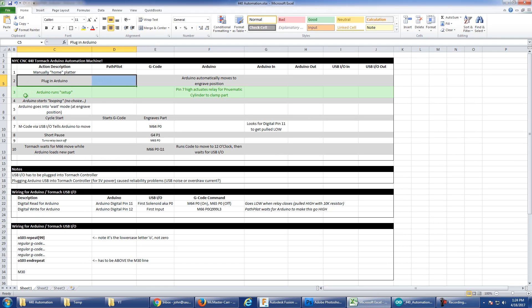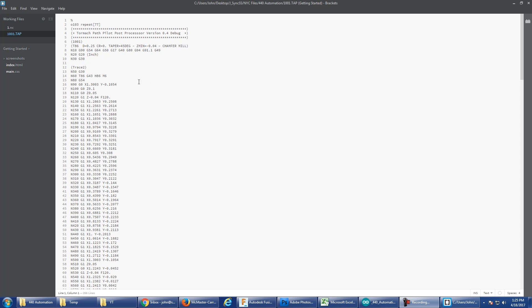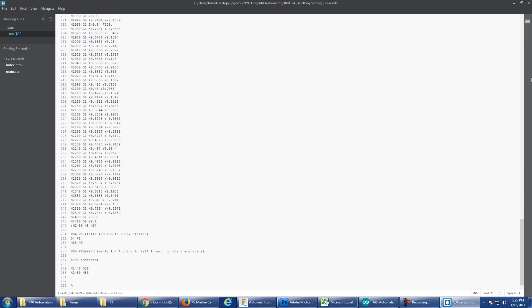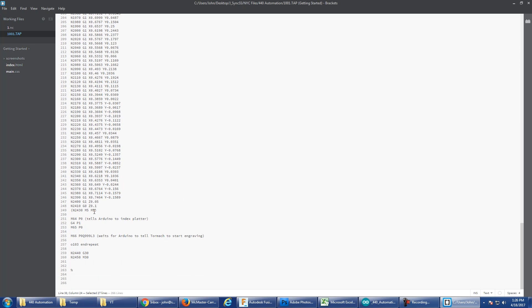So let's go back to Excel. We plug in the Arduino. Arduino runs the setup, like I just mentioned, goes into wait mode. So now I hit cycle start in PathPilot. What that does, it runs my G-code. This is just stuff that I posted out from Fusion 360 that does the actual engraving. What's different is here at the end, as soon as it gets to the end, M64P0 tells the Arduino to index the platter.